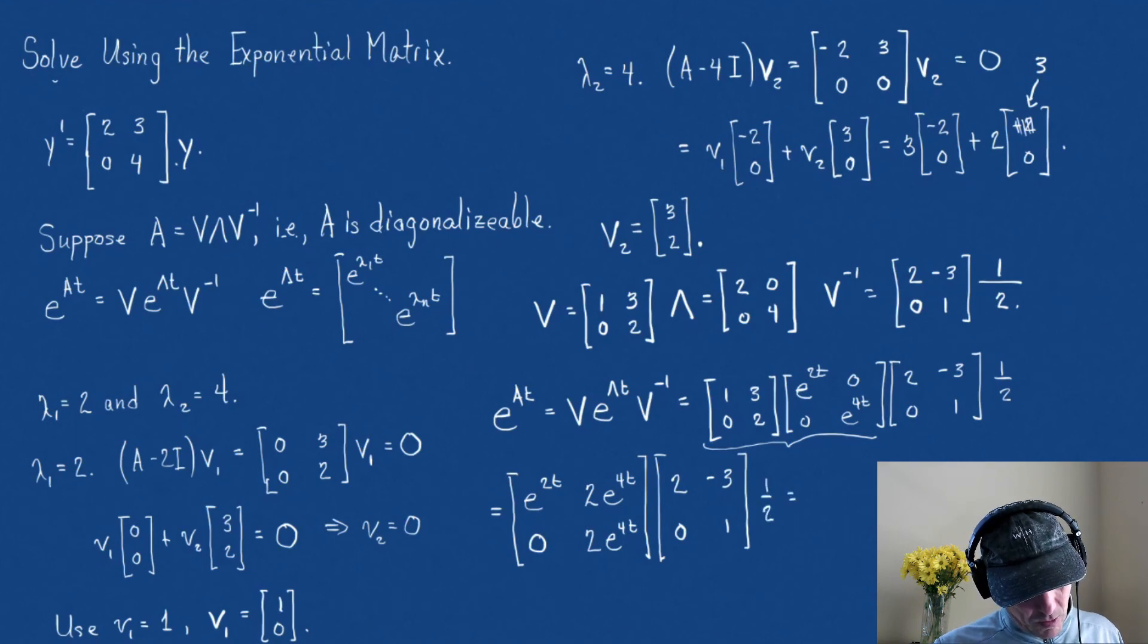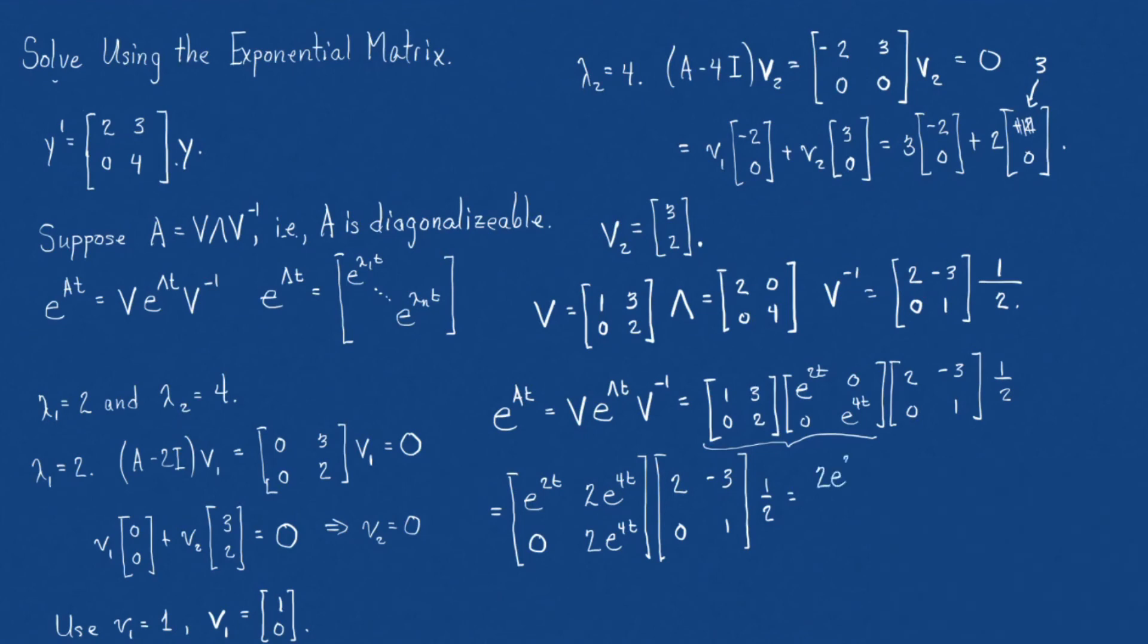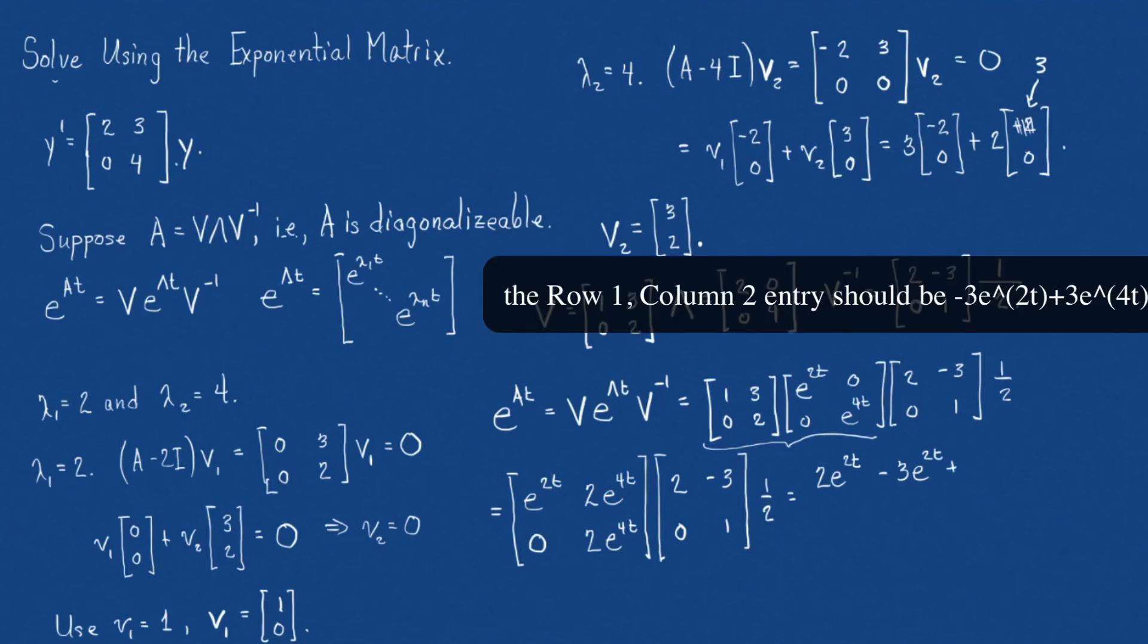So, that's going to be row 1, column 1. That's going to just be 2E to the 2T. Row 1, column 2 is going to be minus 3E to the 2T, plus 2E to the 4T. Okay, and here we go.